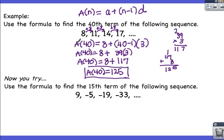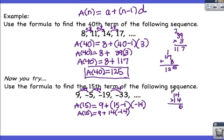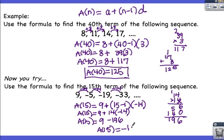Now you try. Pause the movie and resume when you're ready. We're looking for the 15th term. We take our initial number, which is 9, and add the common difference 15 minus 1 times, so 14 times. The common difference is negative 14. So 14 times negative 14 is negative 196, and 9 plus negative 196 equals negative 187. A of 15 equals negative 187.